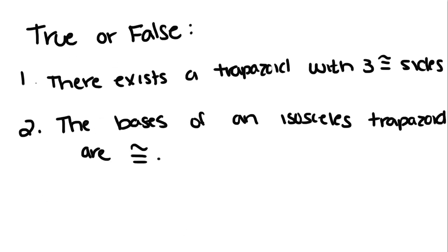So now we have true or false. There exists a trapezoid with three congruent sides. Well, say we have this trapezoid F. And it's an isosceles trapezoid, so these two sides are the same length. Well, all four sides couldn't be the same length, because then it would be a square, not a trapezoid. But this side could equal the length of the legs, and it'd still be a trapezoid. So that is true.